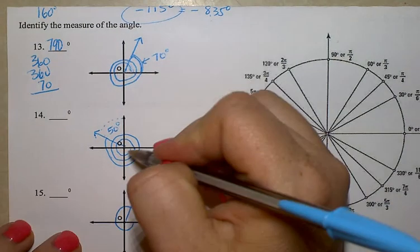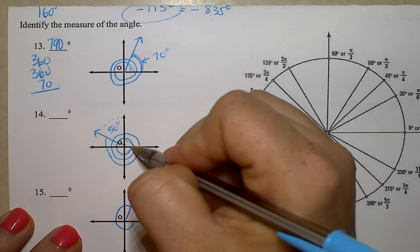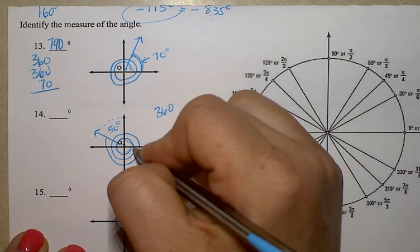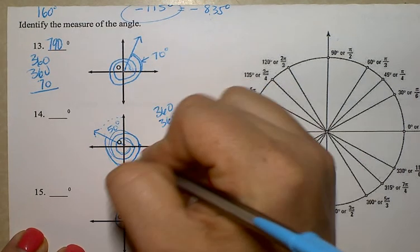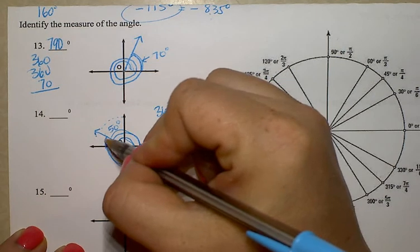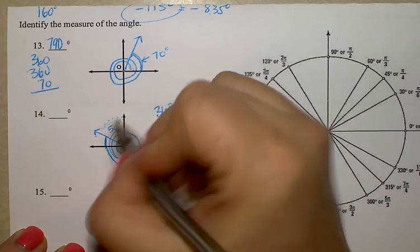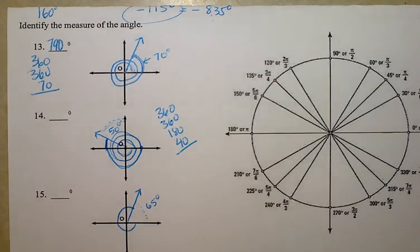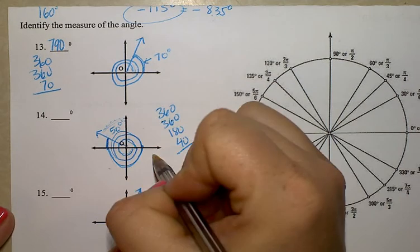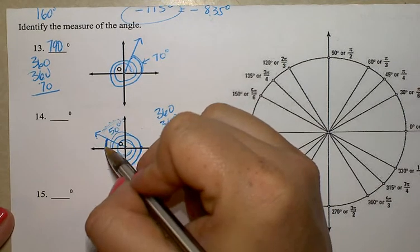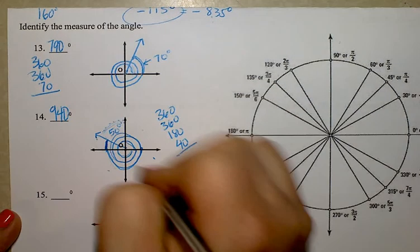For number 14, I'm going backwards — so forget about the negative until the very end. One revolution is 360; a second revolution is another 360. Then half a revolution is 180. Now I need to find this measurement — I know the other part of this quadrant is 50 degrees. This quadrant is 90 degrees total, so 90 minus 50 is 40. Adding 360 plus 360 plus 180 plus 40 gives 940, but since we went backwards, the answer is negative 940.